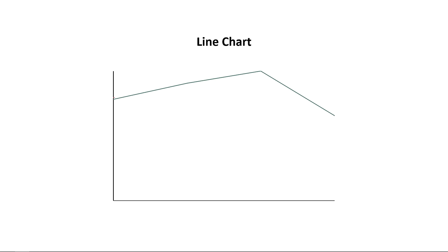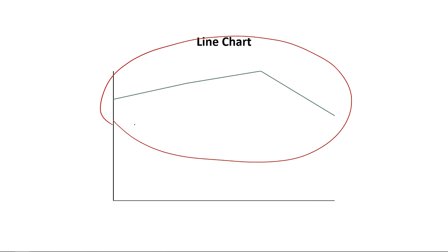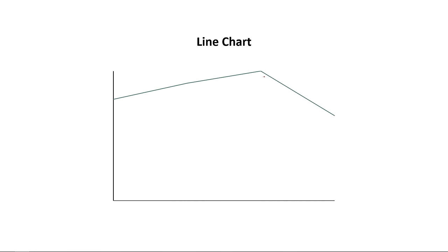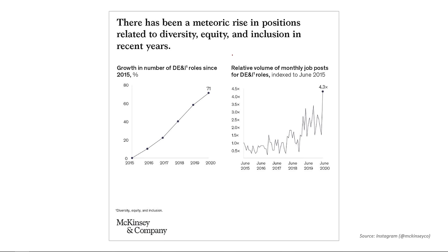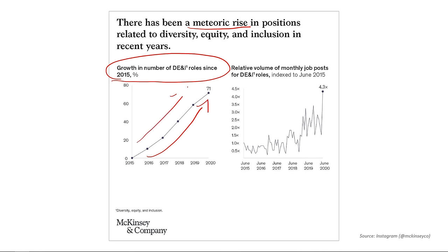The next chart on our list is a line chart, and this is good for showing changes, trends, or patterns over time. It's similar to a column chart, but instead of focusing on individual columns, all the points are connected together so you focus on the data as a whole. This helps emphasize things like downward trends, spikes, upward trends, and anomalies. For example, here we have a chart about the growth in diversity, equity, and inclusion roles since 2015 — it's showing a meteoric rise, which the line chart emphasizes well with its sloping lines.